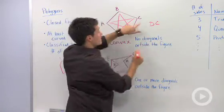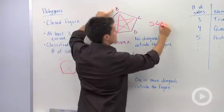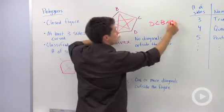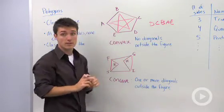I can go D, C, then B, then A, then E. So that's one way to name that polygon.